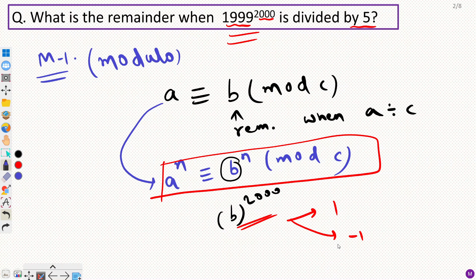So obviously either my B has to be 1 or minus 1 right. Because in these two cases only we know we can solve this very fast. So any power I am going to raise, any big power of 1 it is always going to give me 1 right.